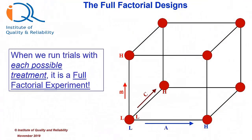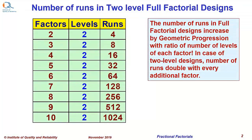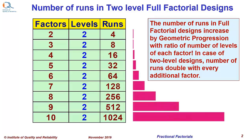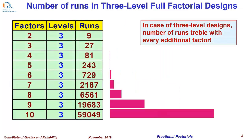When we run trials with each possible treatment, it is a full factorial experiment. In the figure shown of the cube, there are three factors and each is at two levels, and therefore this has got 2 to the power 3, that is totally 8 runs. The number of runs in full factorial designs increases by geometric proportion with the ratio of number of levels of each factor. In case of two-level designs, number of runs double with every additional factor. In three-factor designs, the geometric ratio is 3 and with each additional factor, the number of runs treble.